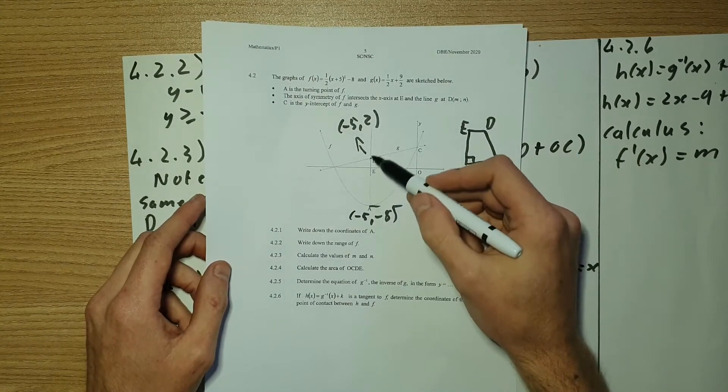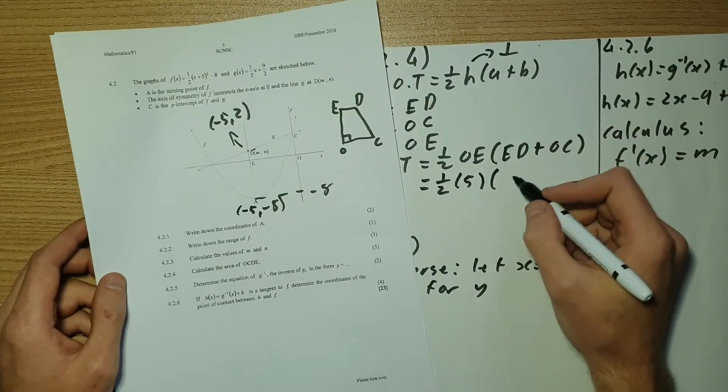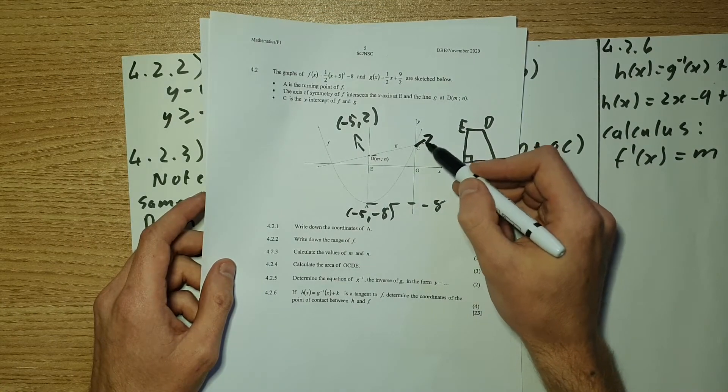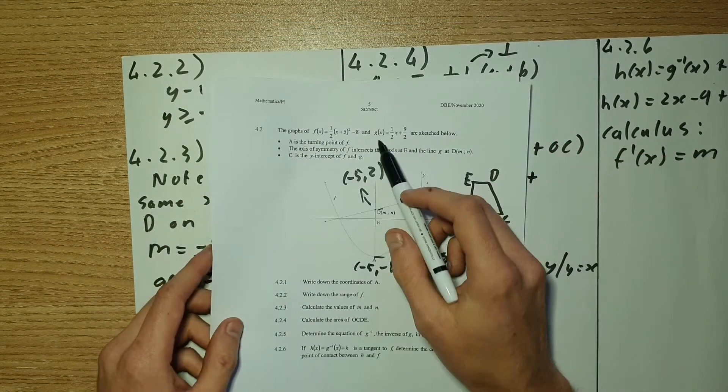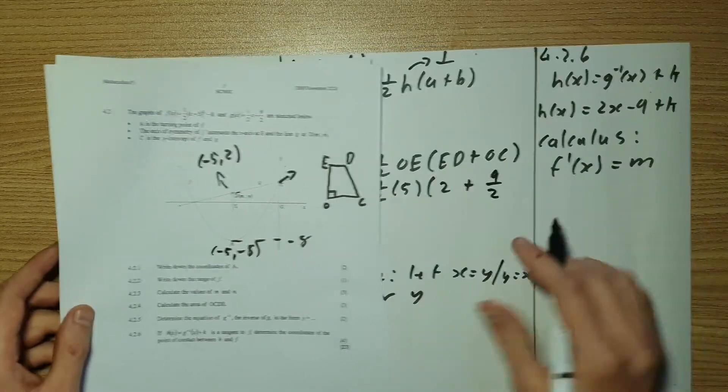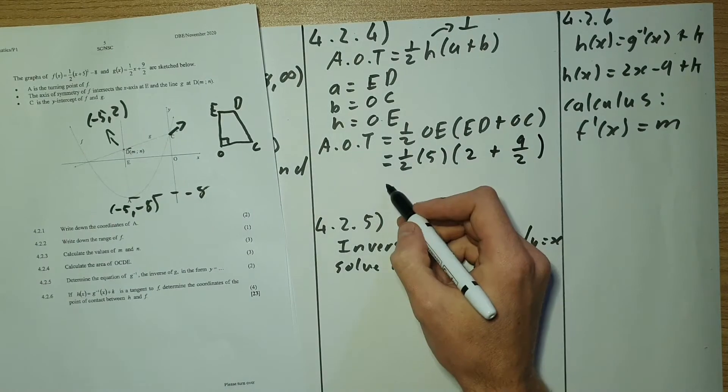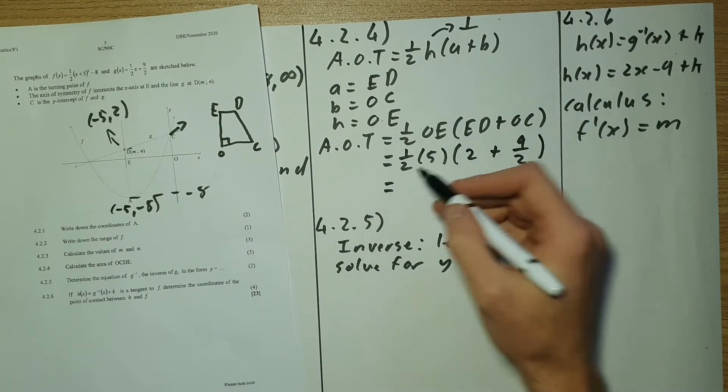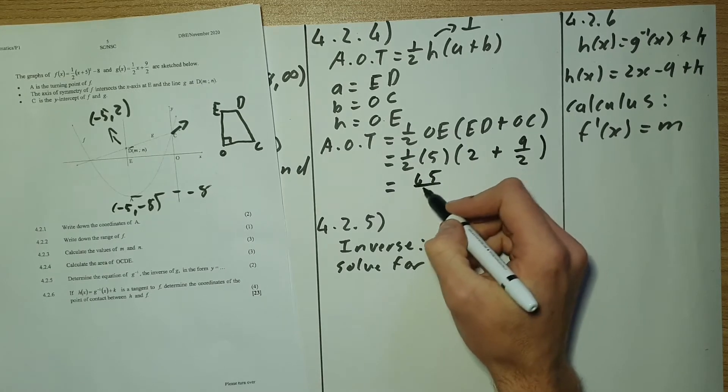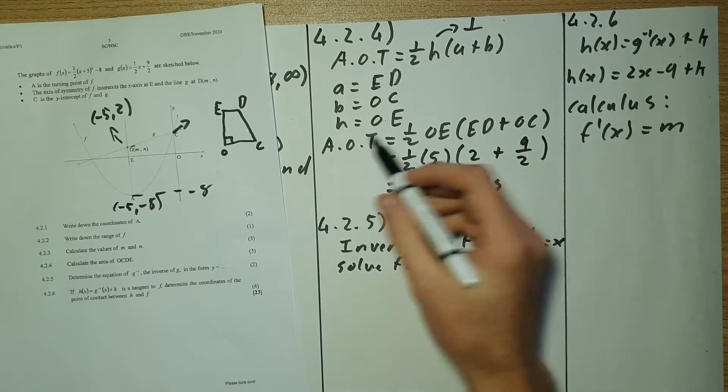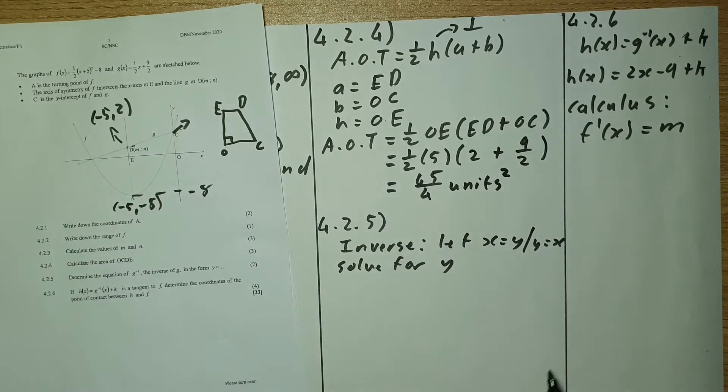ED. ED is this little piece up here. We know that that is two plus OC. So OC, this point over here, is the Y intercept of G, which we can see is nine over two. So nine over two. And if you sort out those numbers, you will get down to an answer of 65 over four units. But remember, it's area, so it must be squared.